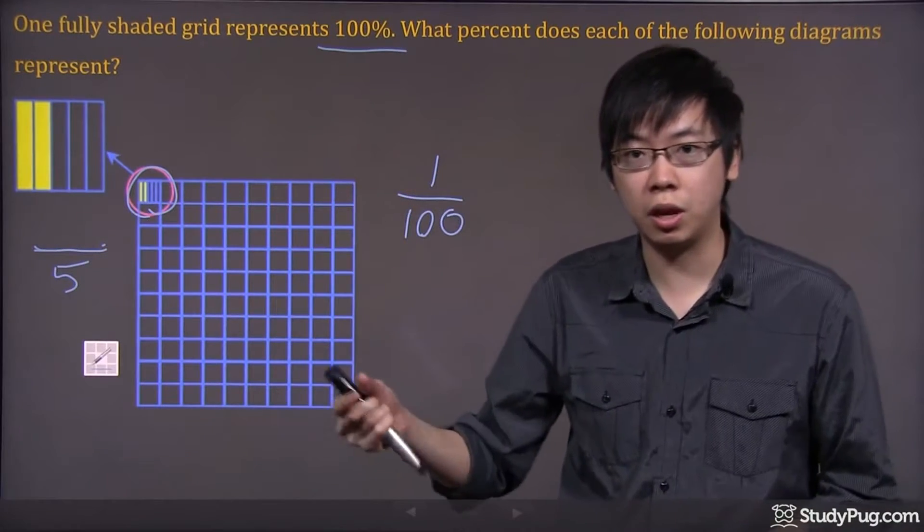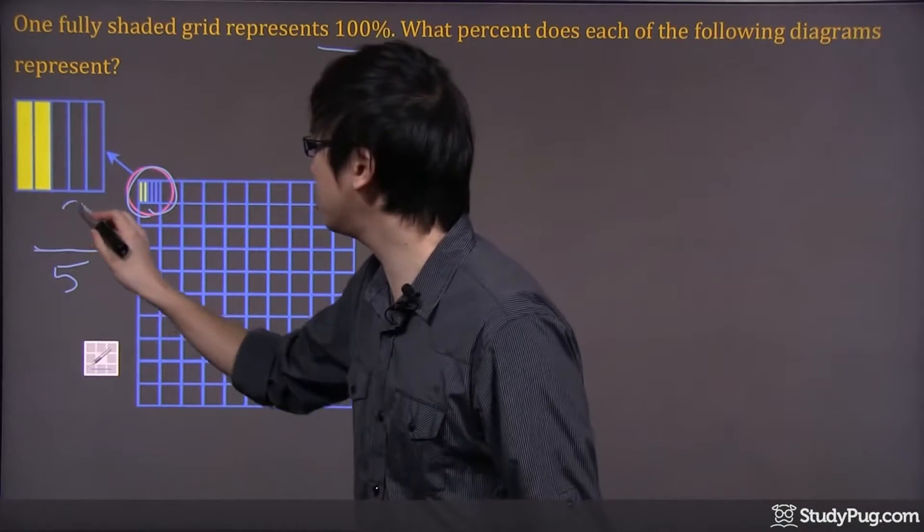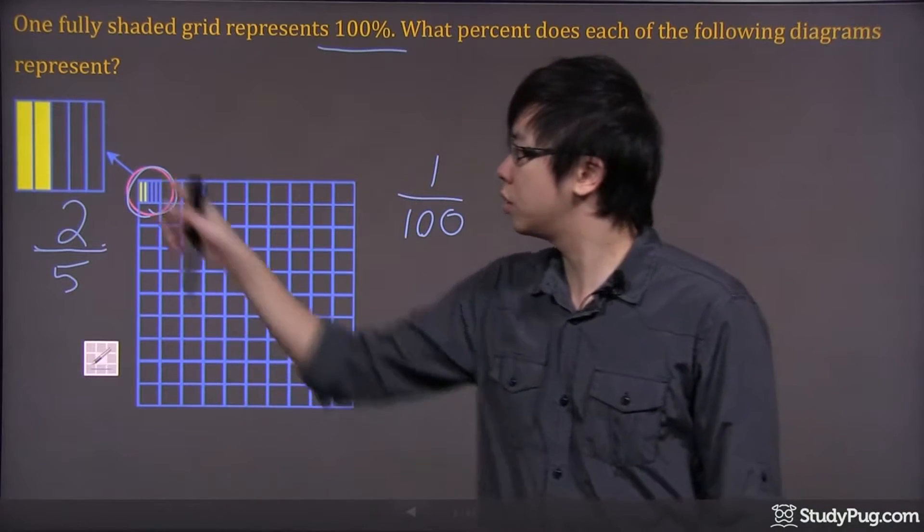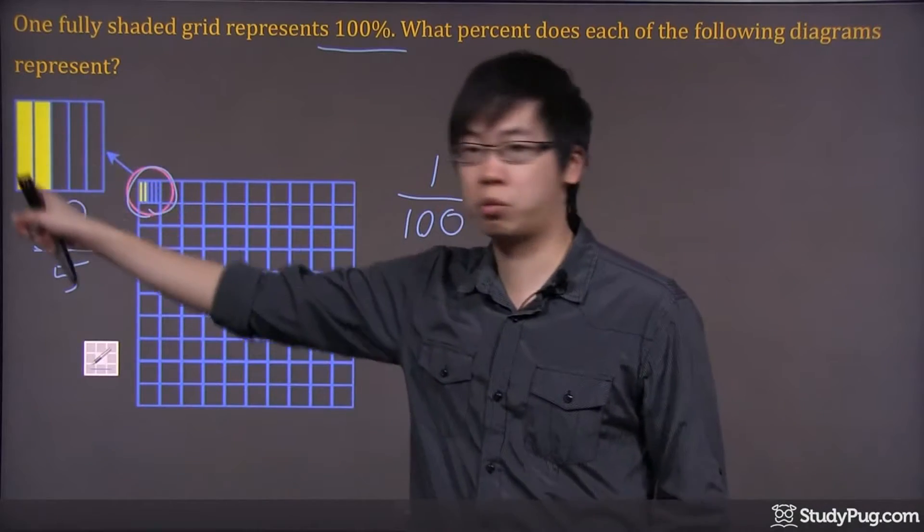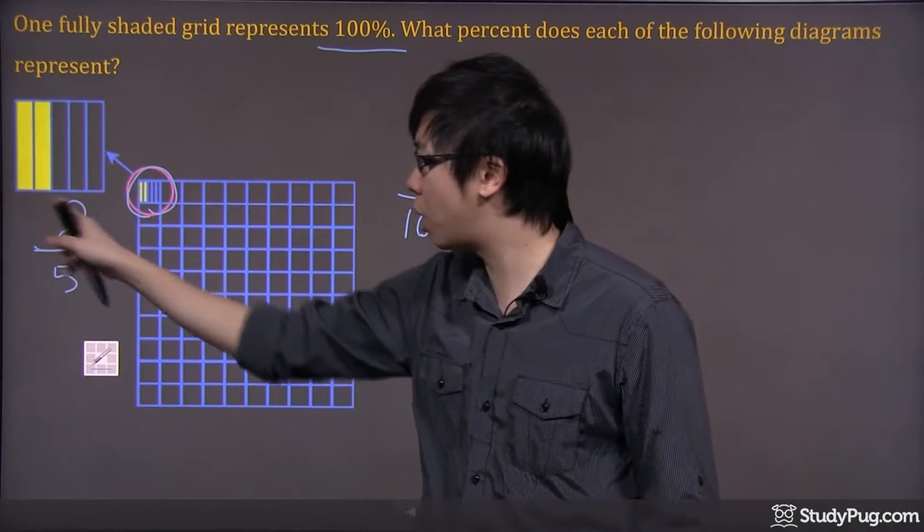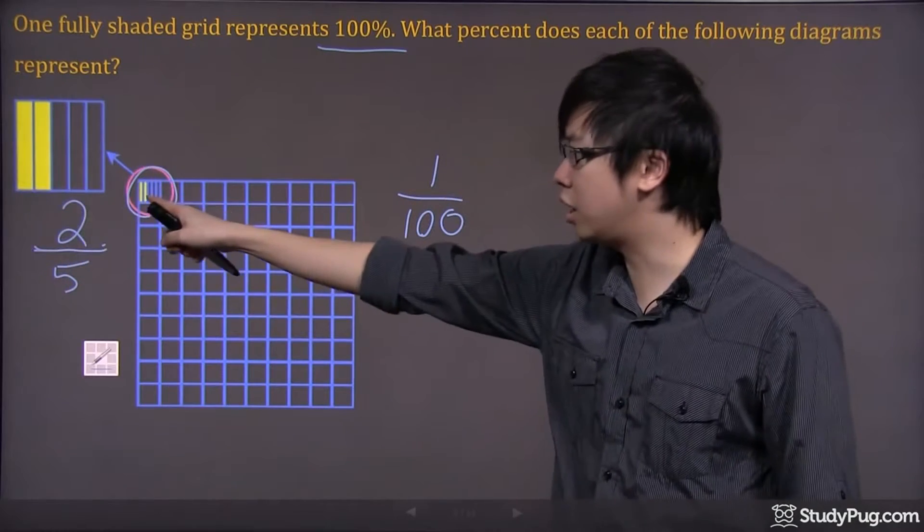Then, how many stripes do you see? I see two yellow stripes. So there's a two right on the top. So that little yellow section right there represents two-fifths of that box right there. And then this box right here is this tiny box right here.